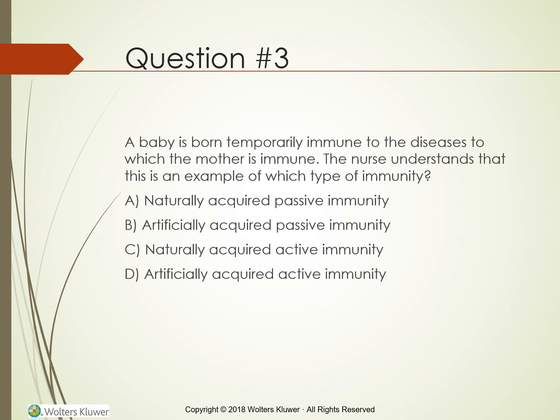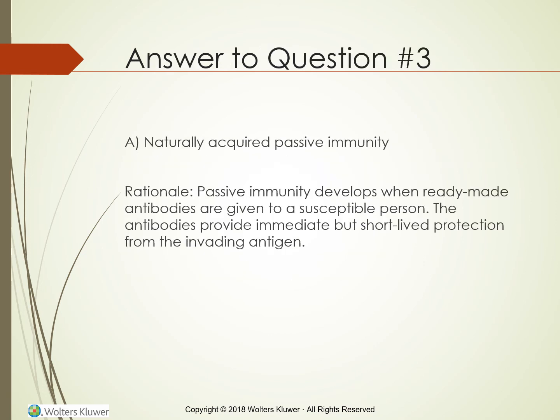Question: A baby is born temporarily immune to the diseases to which the mother is immune. The nurse understands that this is an example of which type of immunity? A. Naturally acquired passive immunity. B. Artificially acquired passive immunity. C. Naturally acquired active immunity. D. Artificially acquired active immunity. The answer is A, naturally acquired passive immunity. Passive immunity develops when ready-made antibodies are given to a susceptible person, providing immediate but short-lived protection from the invading antigen.